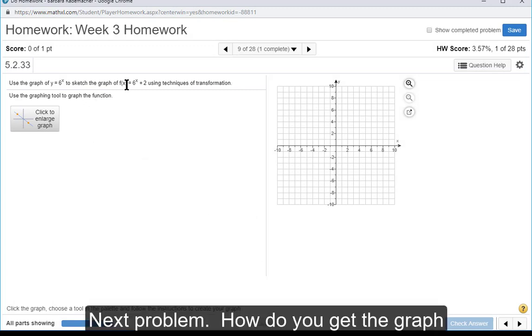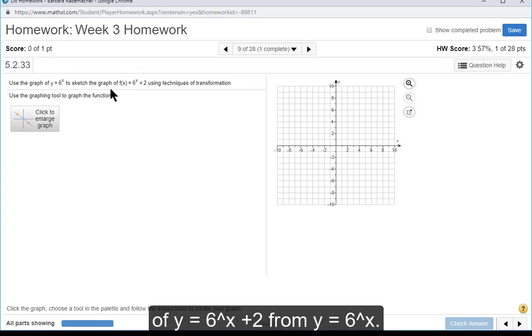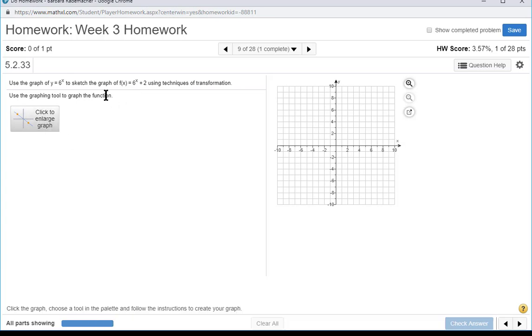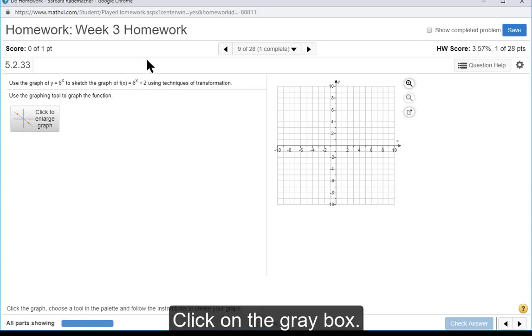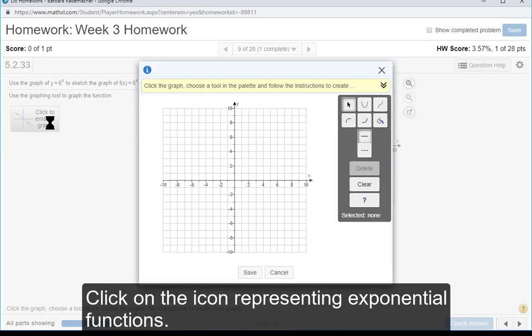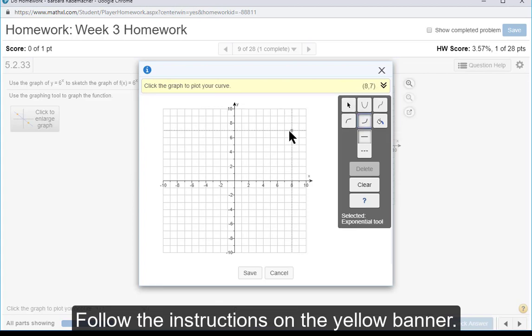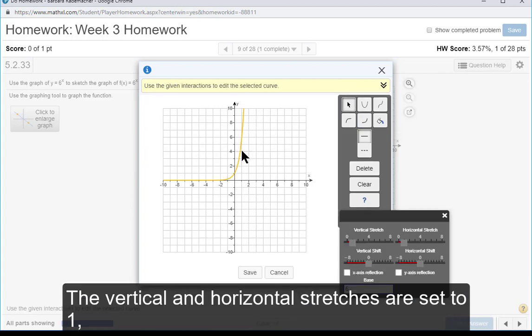F of x equals 6 to the x, and we want to find out how to get f of x equals 6 to the x plus 2 from y equals 6 to the x. The plus 2 on the right side is a vertical shift. Click on the gray box. Click on the icon representing exponential functions.